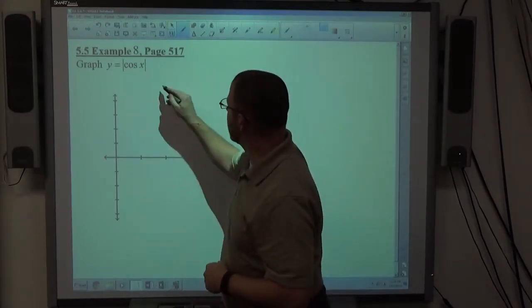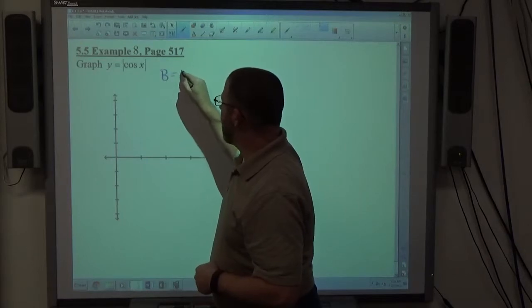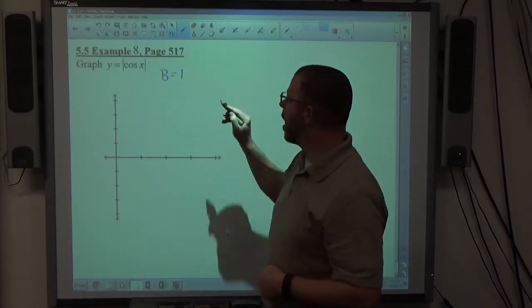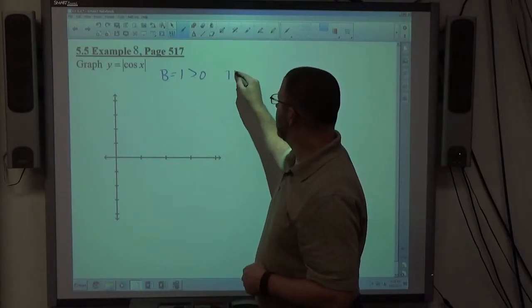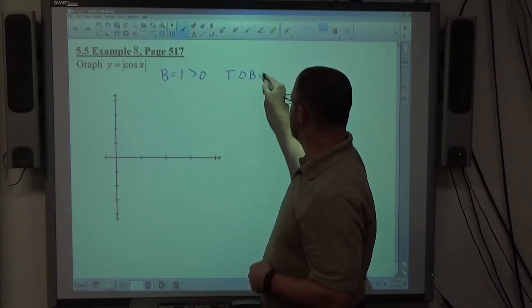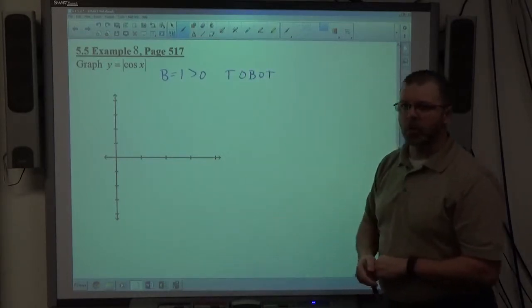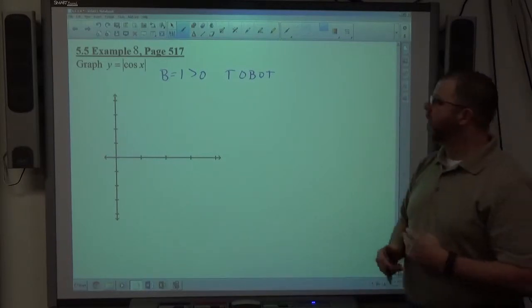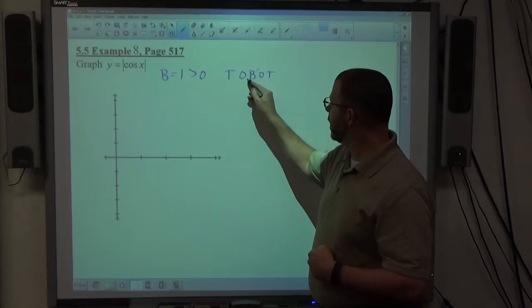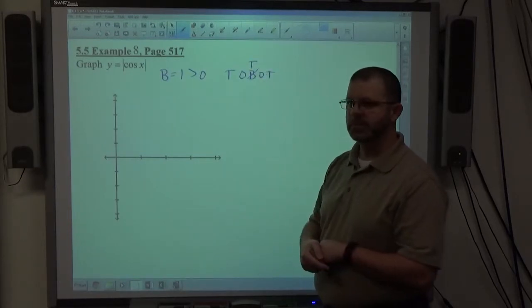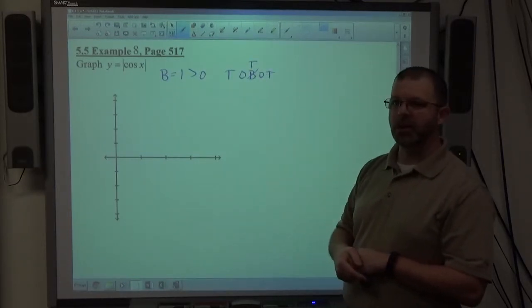So imagine the absolute value bars aren't there to begin with. So if I was doing this normally, I would say B is equal to positive one, right? Positive one is greater than zero, so my normal scenario would be top first. So toe bottom would be my normal scenario, right? The absolute value bars make the negative turn to a positive, so the B changes to a T.